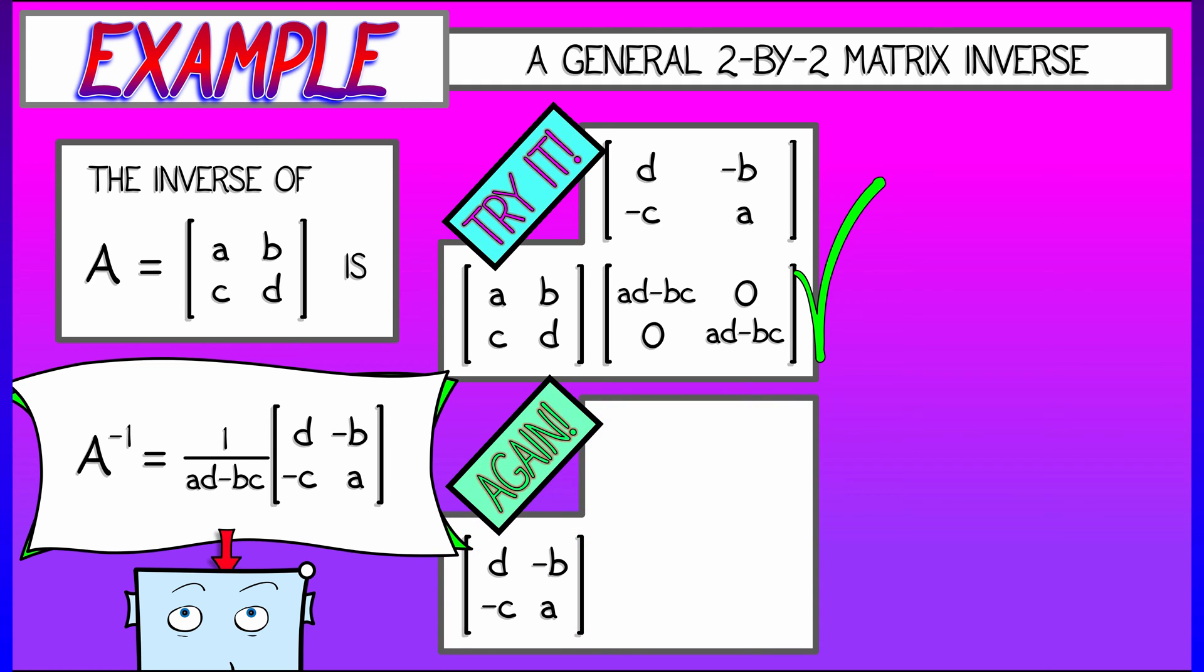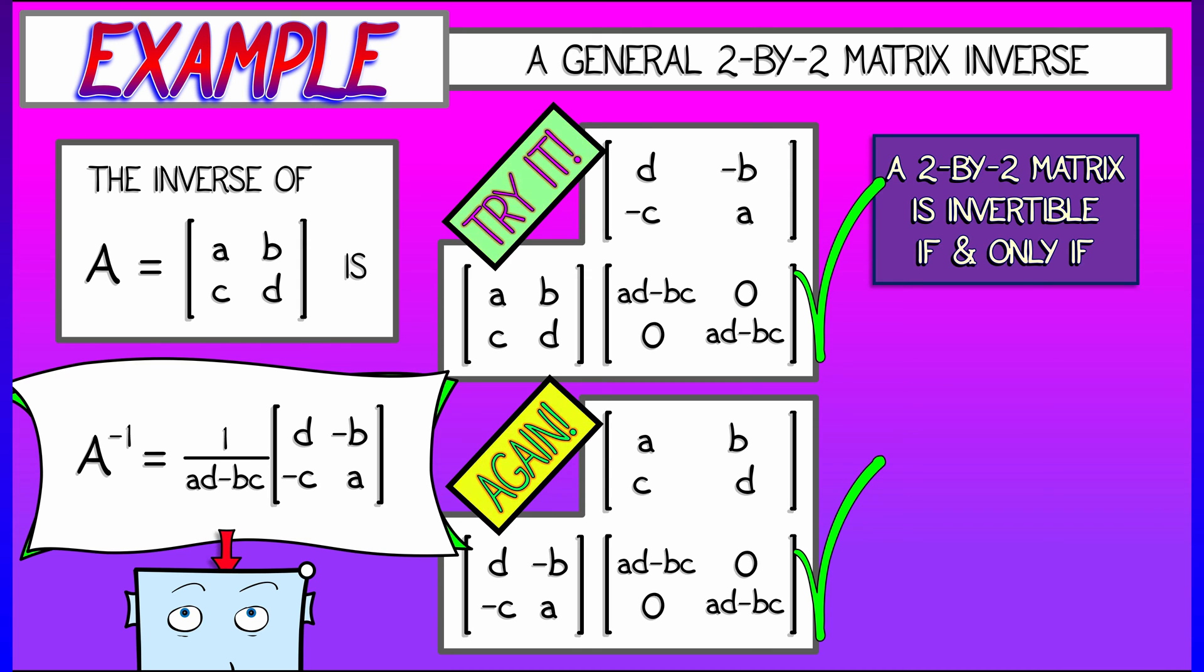Oh, wait a minute. Remember in the definition of an inverse, you got to go both ways. So we have to multiply in the reverse order too, and show that again we get the identity matrix, which we do. Wonderful.